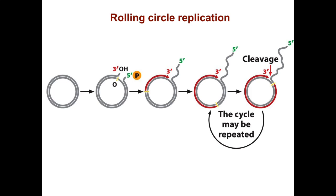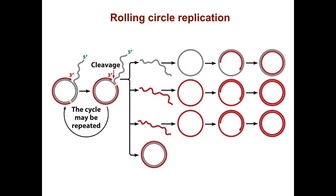In rolling circle replication, replication is initiated by a break in one of the nucleotide strands. DNA synthesis begins at the 3' end of the broken strand, and the inner strand is used as a template. The 5' end of the broken strand is displaced. This cleavage releases a single-stranded linear DNA and a double-stranded circular DNA. The linear DNA may recircularize and serve as a template for the synthesis of another complementary strand, producing multiple circular DNA molecules.